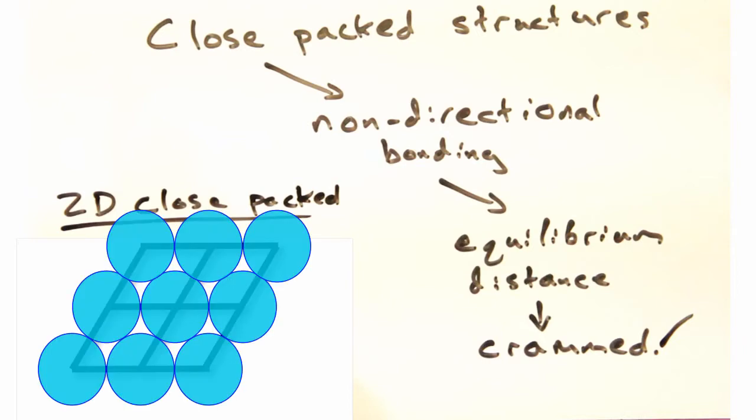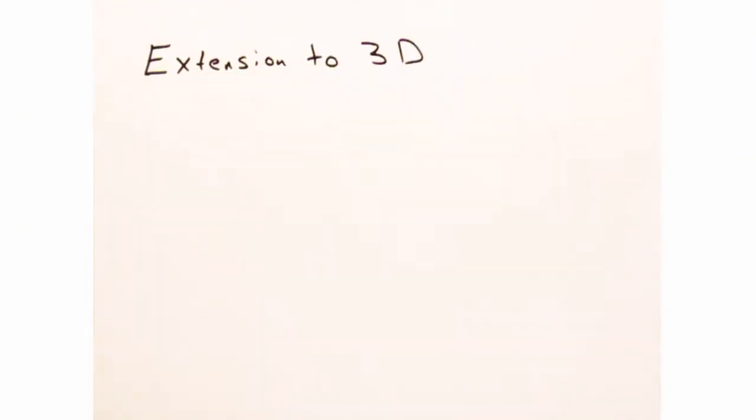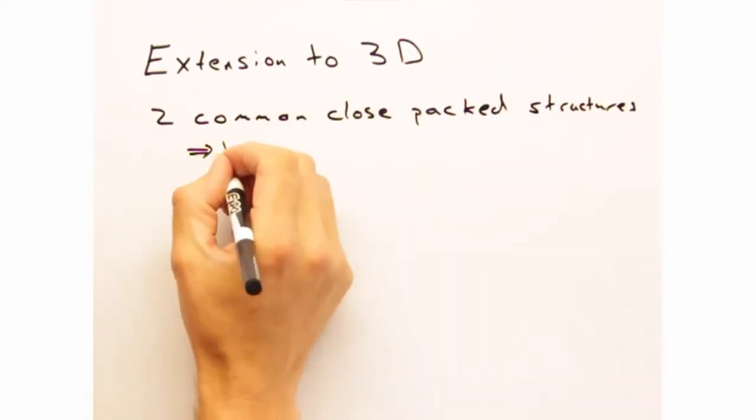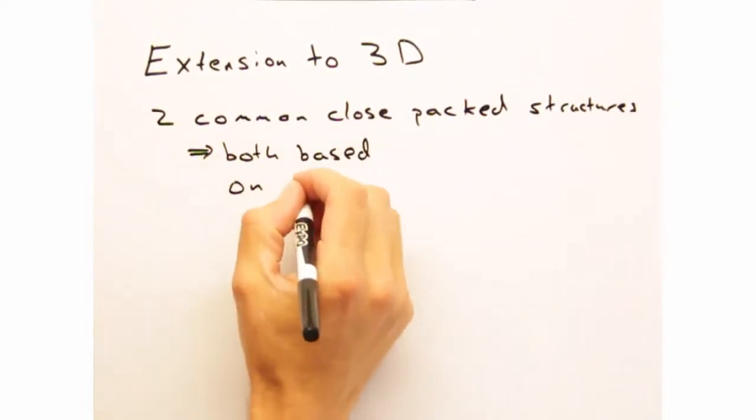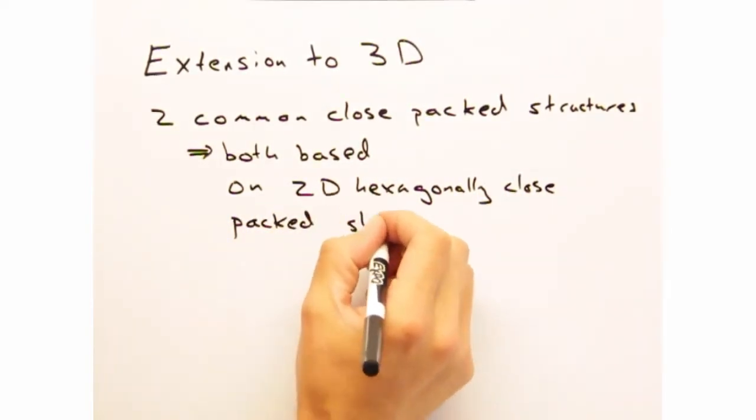So, it turns out extending this concept into three dimensions is mathematically a little tricky. But the consensus in the field is that there are two different common structures that are as close-packed as you can get in 3D. They both take two-dimensional sheets of hexagonally packed spheres and lay them on top of each other.